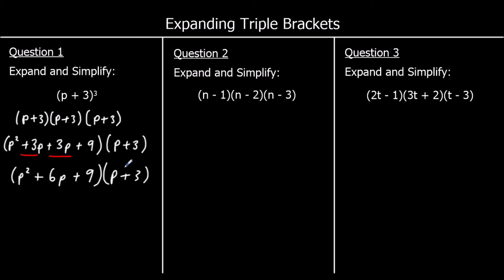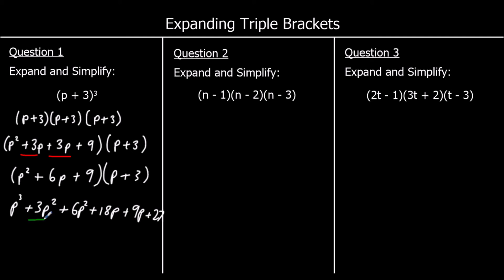And then we're going to do p squared times p, which is p cubed. p squared times 3 is 3p squared. 6p times p is 6p squared. 6p times 3 is 18p. 9 times p is 9p. And 9 times 3 is 27. Collecting like terms: two p squared terms and two p terms. So I've got p cubed. 3p squared plus 6p squared is 9p squared. 18p plus 9p makes 27p. And plus 27 on the end.